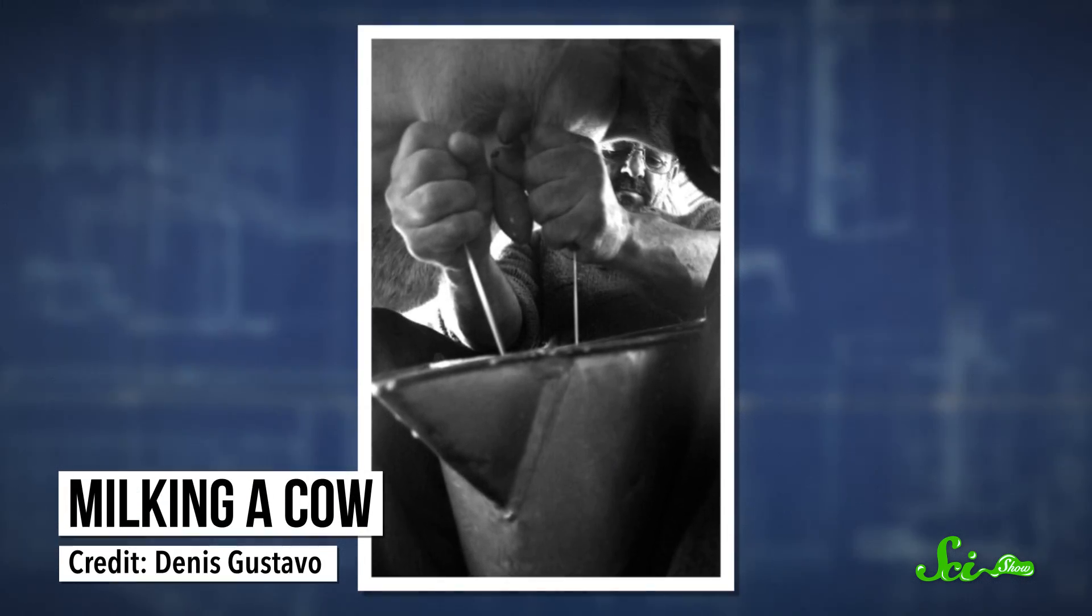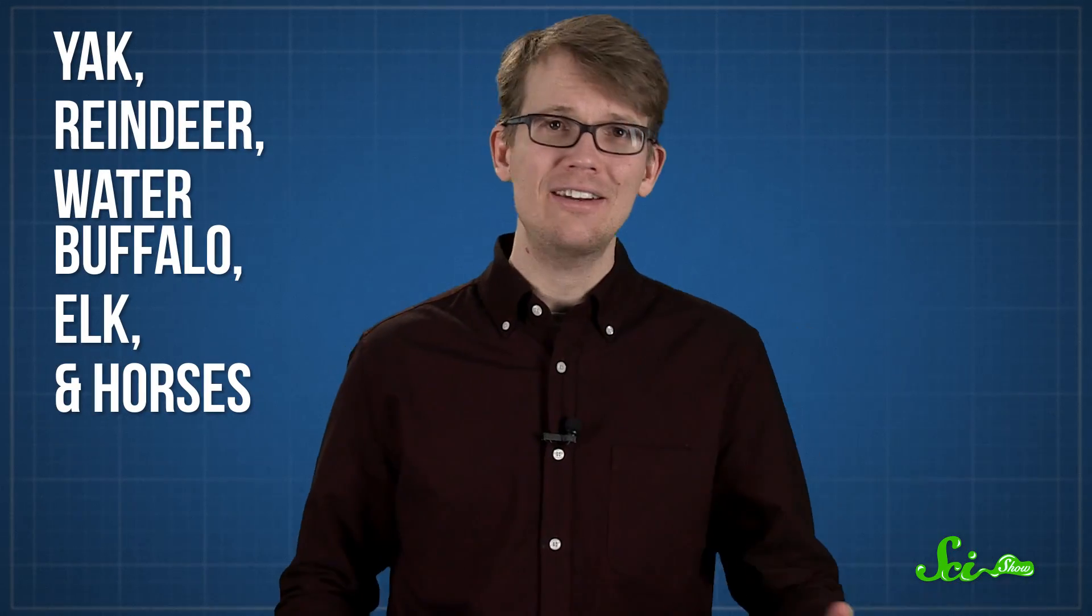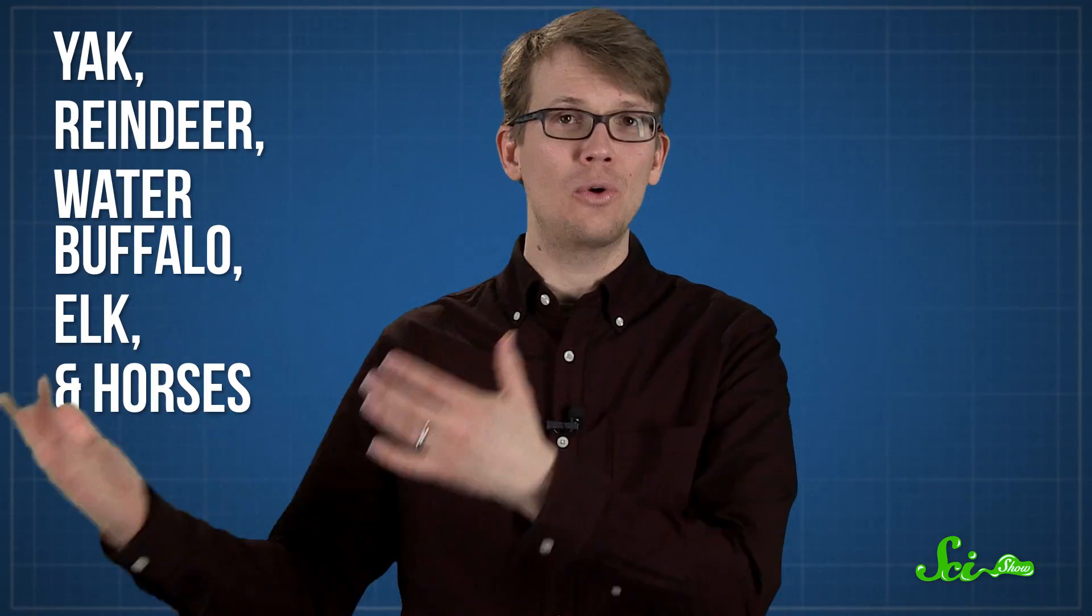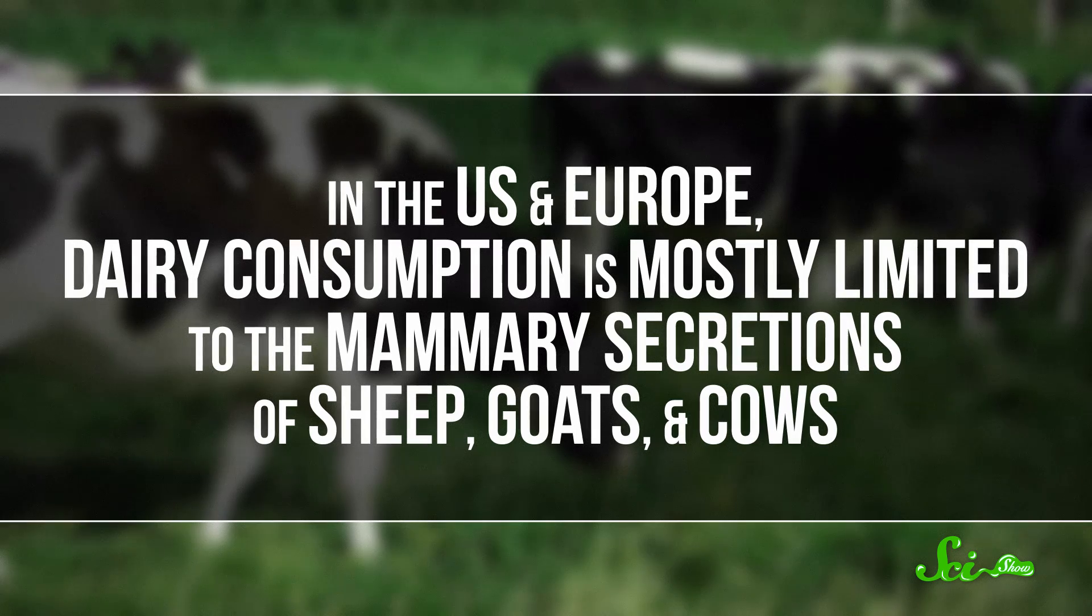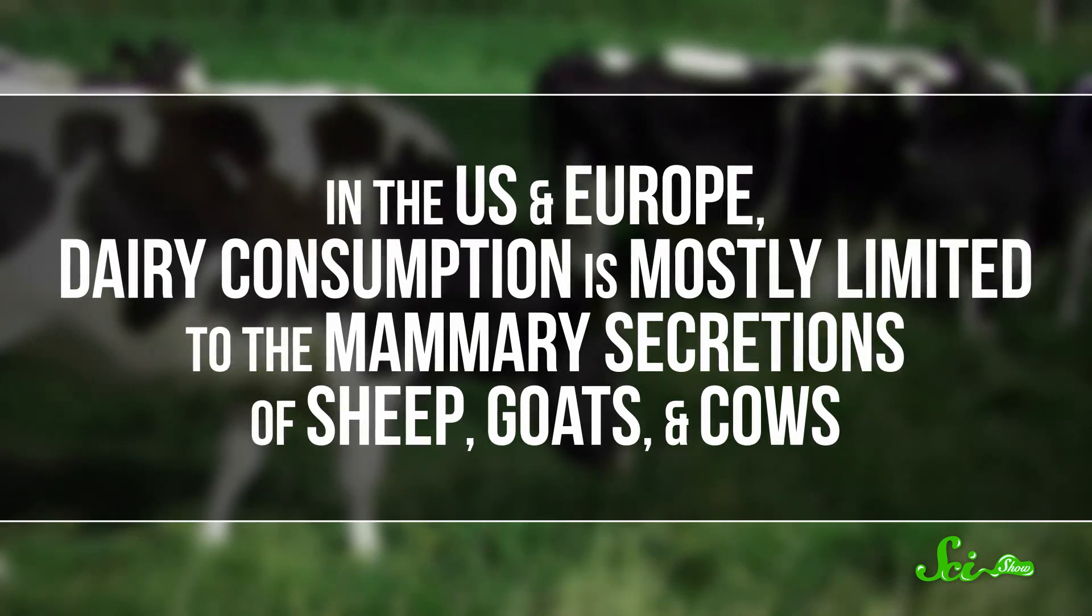People around the world drink milk and make other food products from animals like yak, reindeer, water buffalo, elk, and horses. In the U.S. and Europe, dairy consumption is mostly limited to the mammary secretions of sheep, goats, and cows. But really, mostly cows.